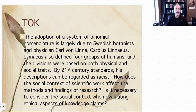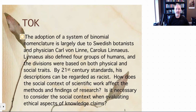This is chapter 26, which deals with classification. We'll start with a TOK question: the adoption of binomial nomenclature is largely due to Swedish botanist and physician Carl von Linné, also known as Carolus Linnaeus. Linnaeus defined four groups of humans based on both physical and social traits — by 21st century standards, his descriptions can be regarded as racist. How does the social context of scientific work affect its methods and findings? Is it necessary to consider social context when evaluating ethical aspects of knowledge claims? Take a moment to think about that and write down an answer to discuss in class.